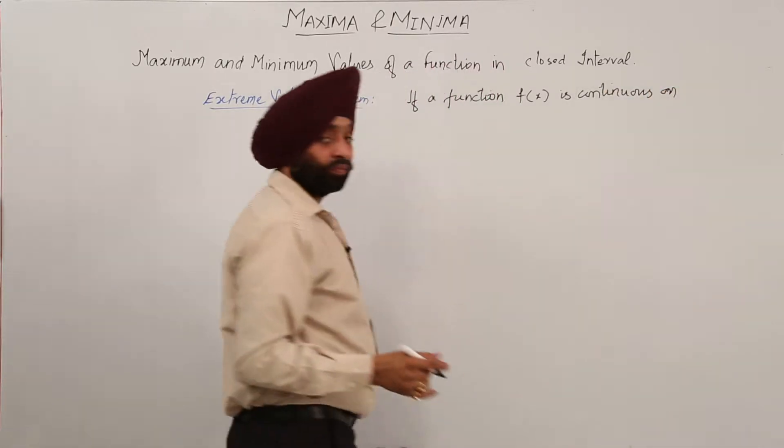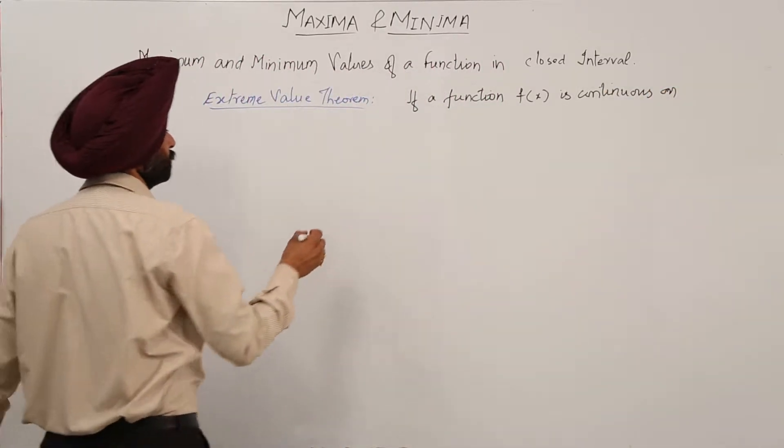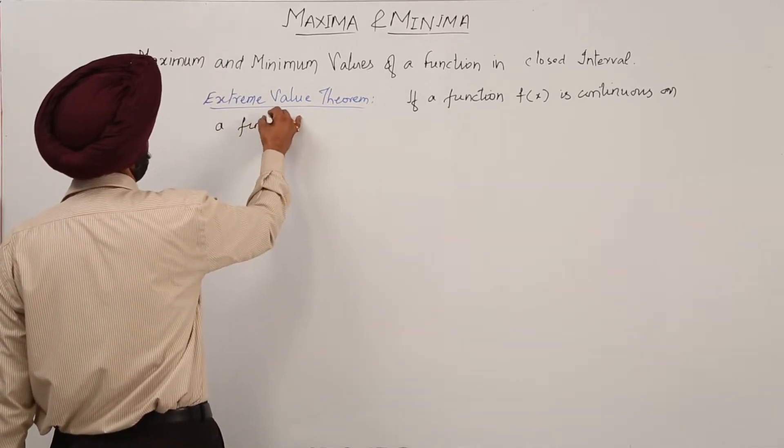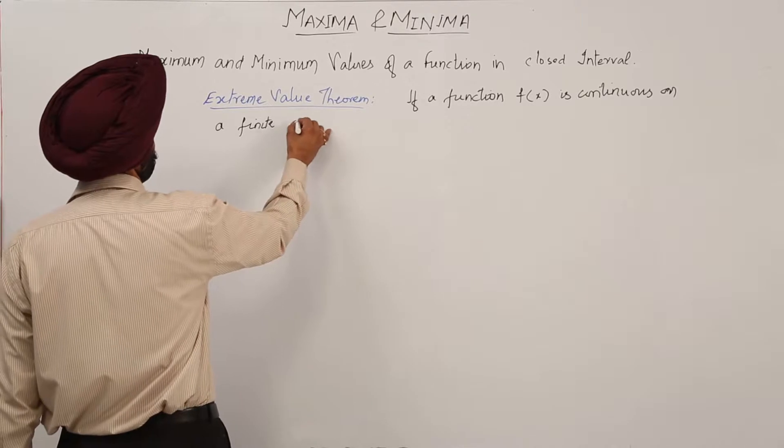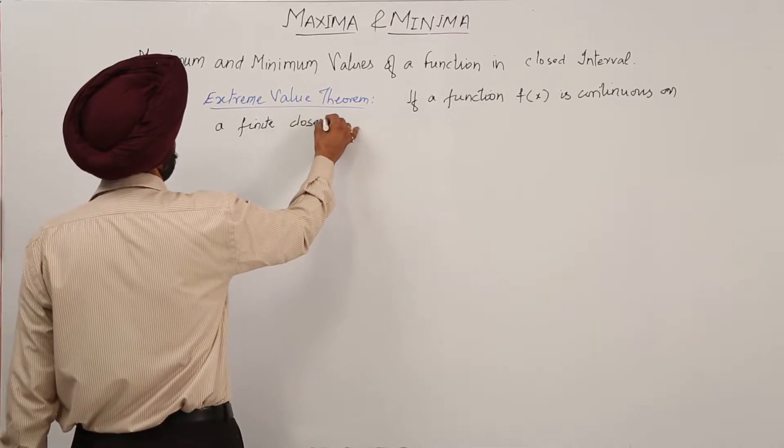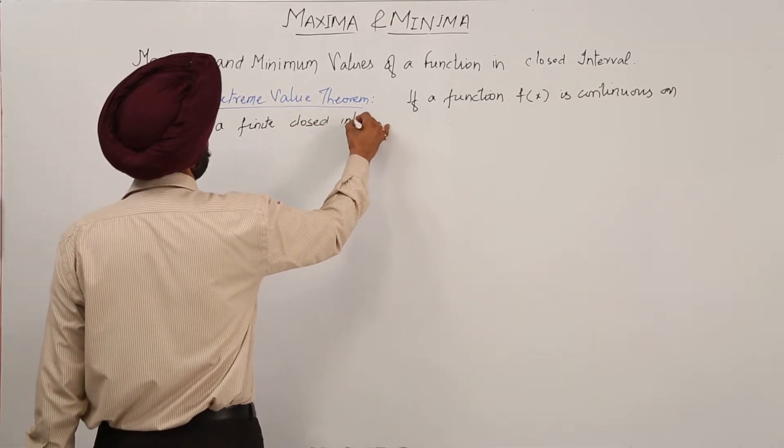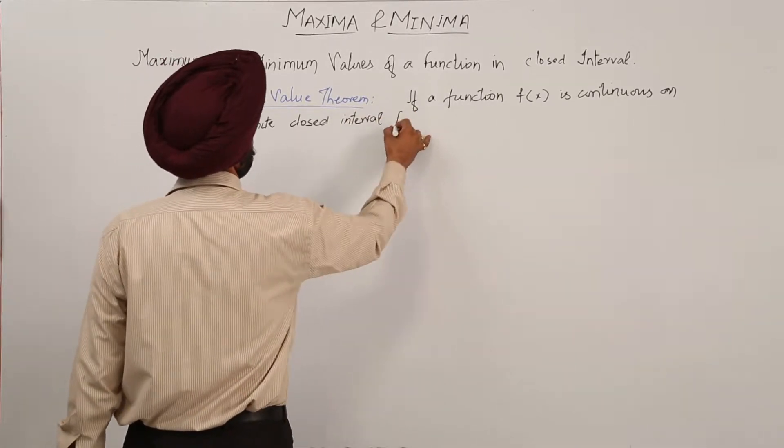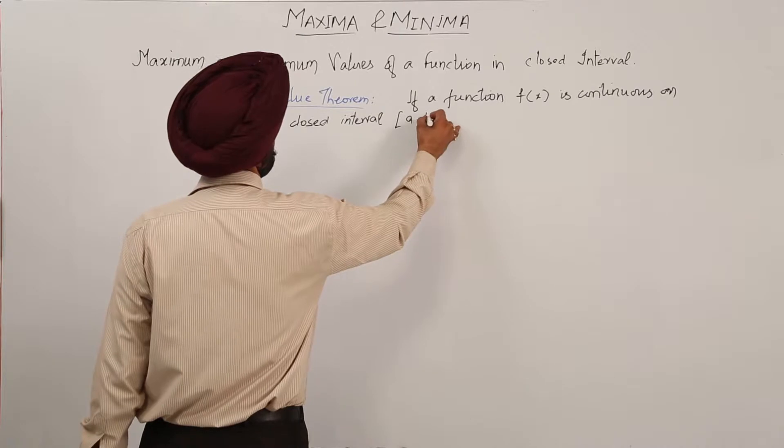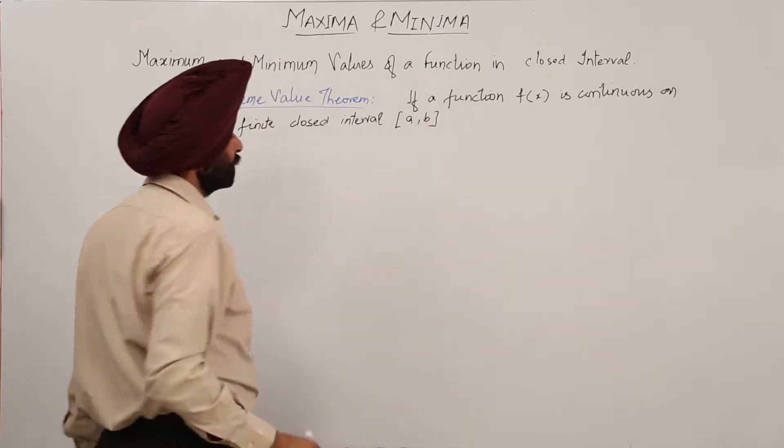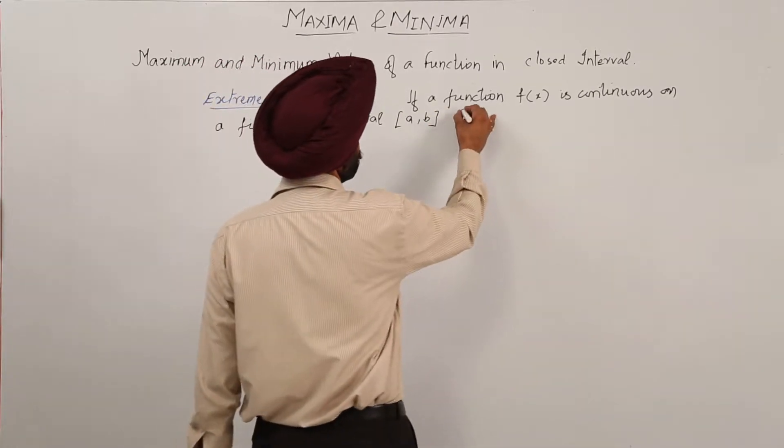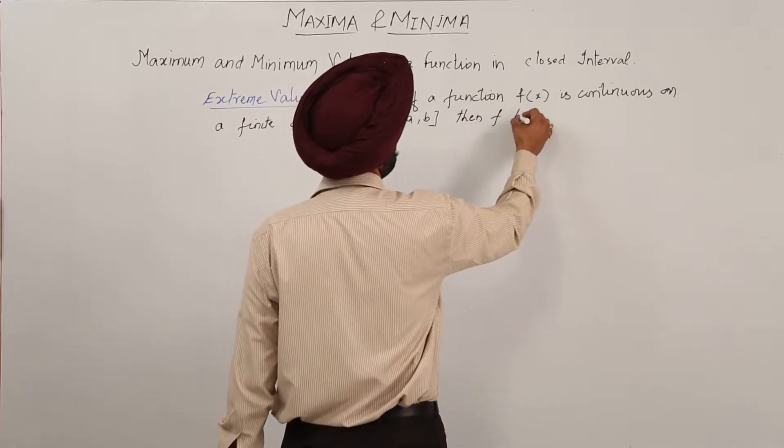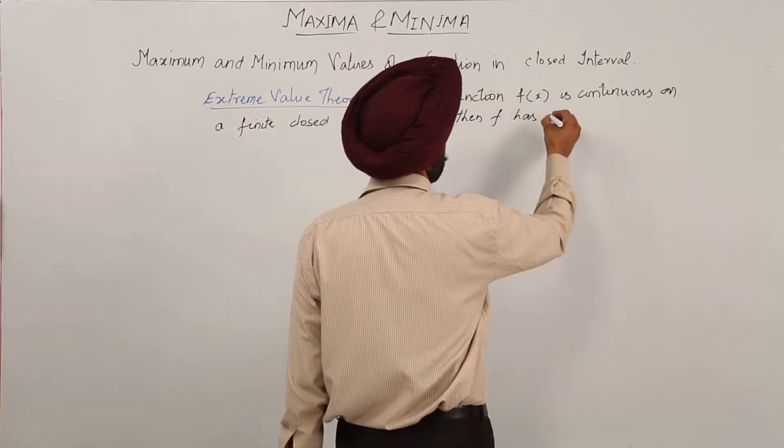on a finite closed interval, continues on a finite closed interval. And the intervals are suppose a to b, then f has both